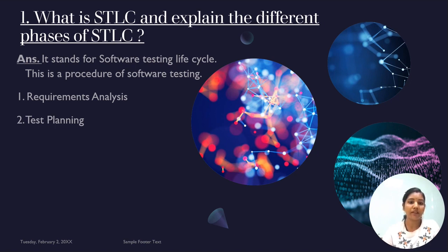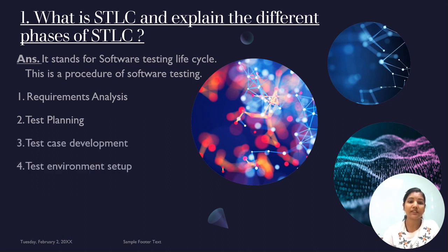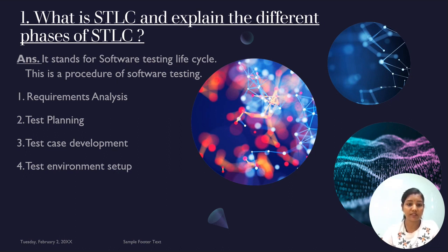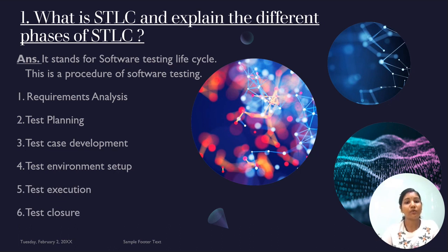The phases of STLC are: first, requirement analysis — that is the BRD or PRD we get from the business perspective. Second is test planning. Third is test case development, where we write test cases using tools like TestRail or Zephyr. Fourth is test environment setup — what application version, build, and environments you are using. Fifth is executing the test cases — we run what we wrote and observe the response. Sixth is test closure, where we close all testing activities.